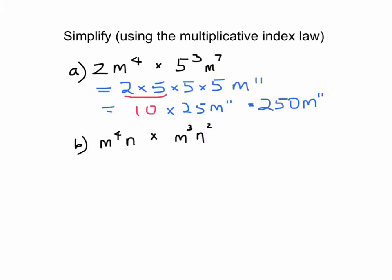In the next one you've got m's and n's. And this time you have to put in the hiding power of 1 there. So if there's no power you can assume it's a power of 1. So here you've got to write m to the power of 4 plus 3 which would be 7, and n to the power of 1 plus 2 which is 3.